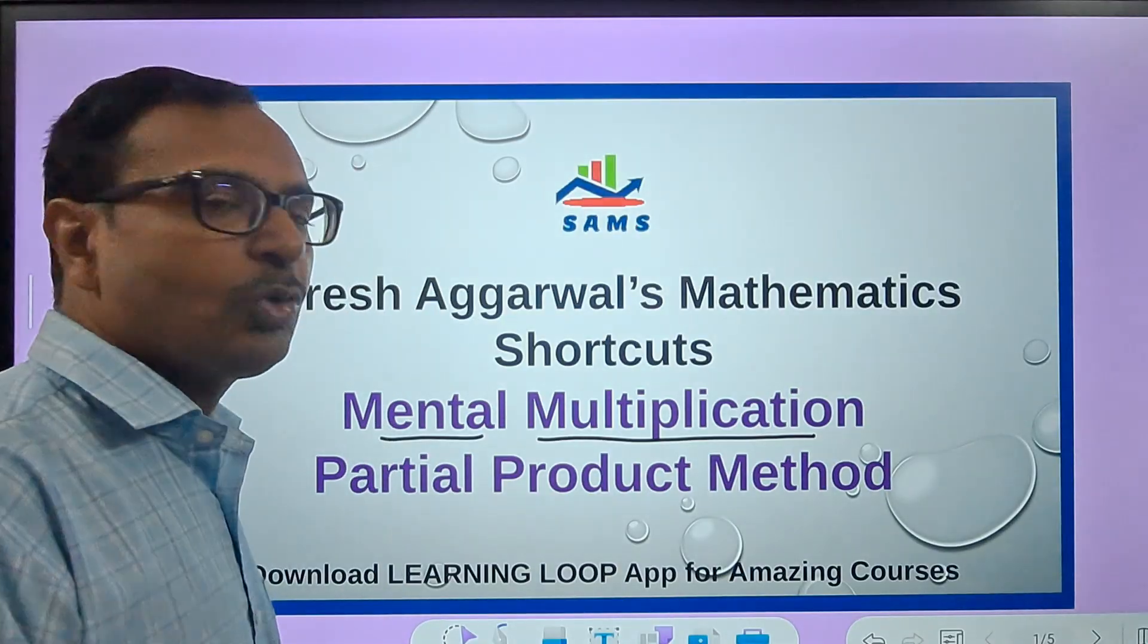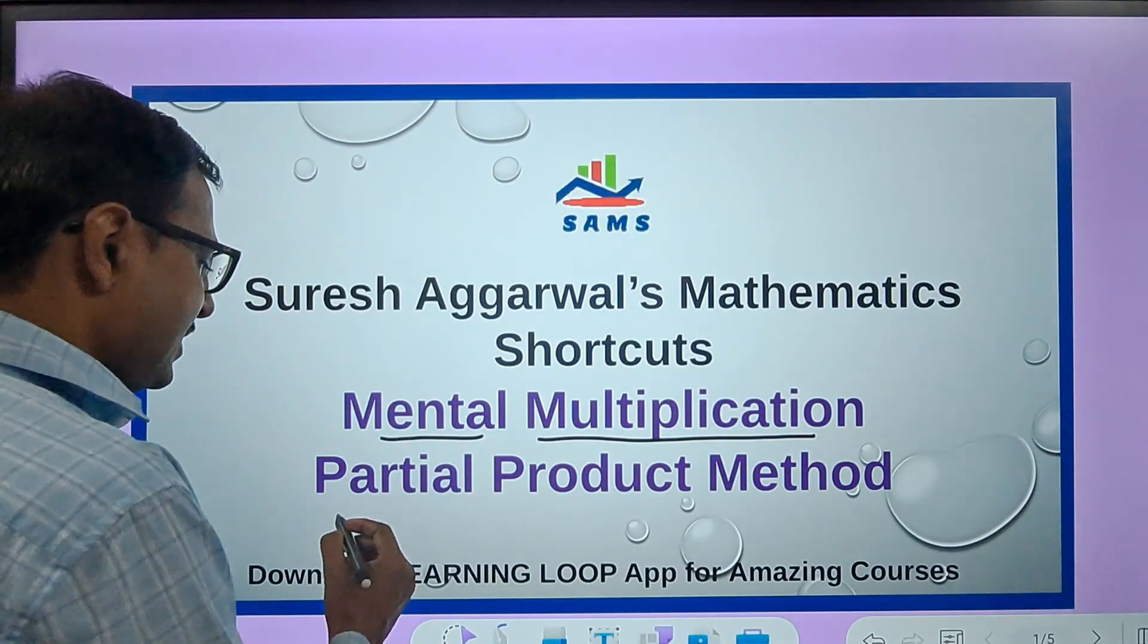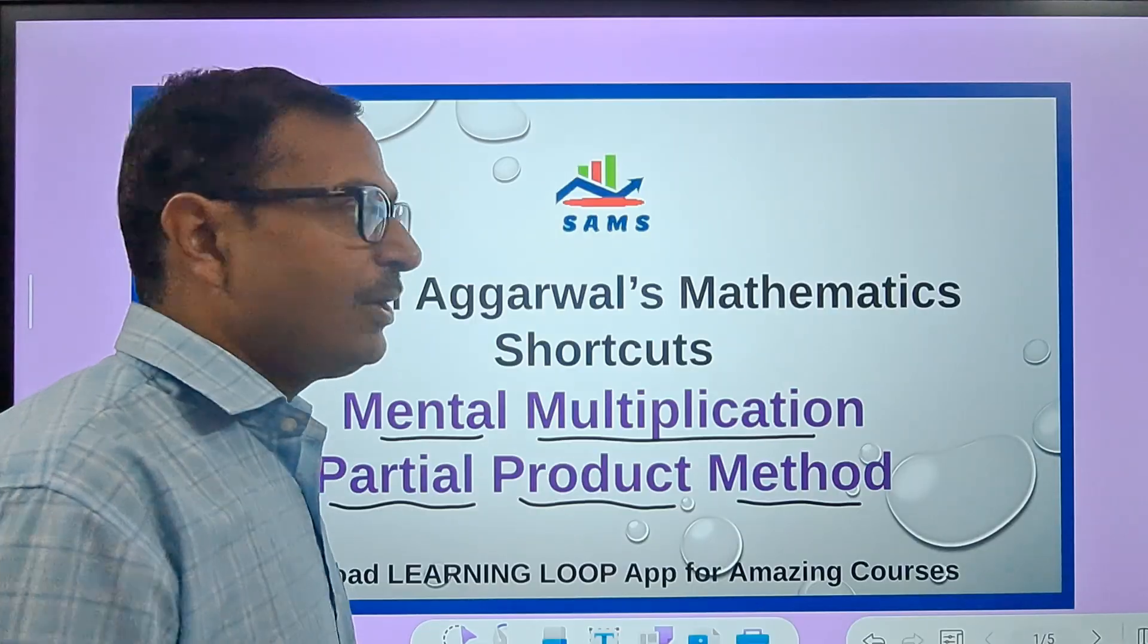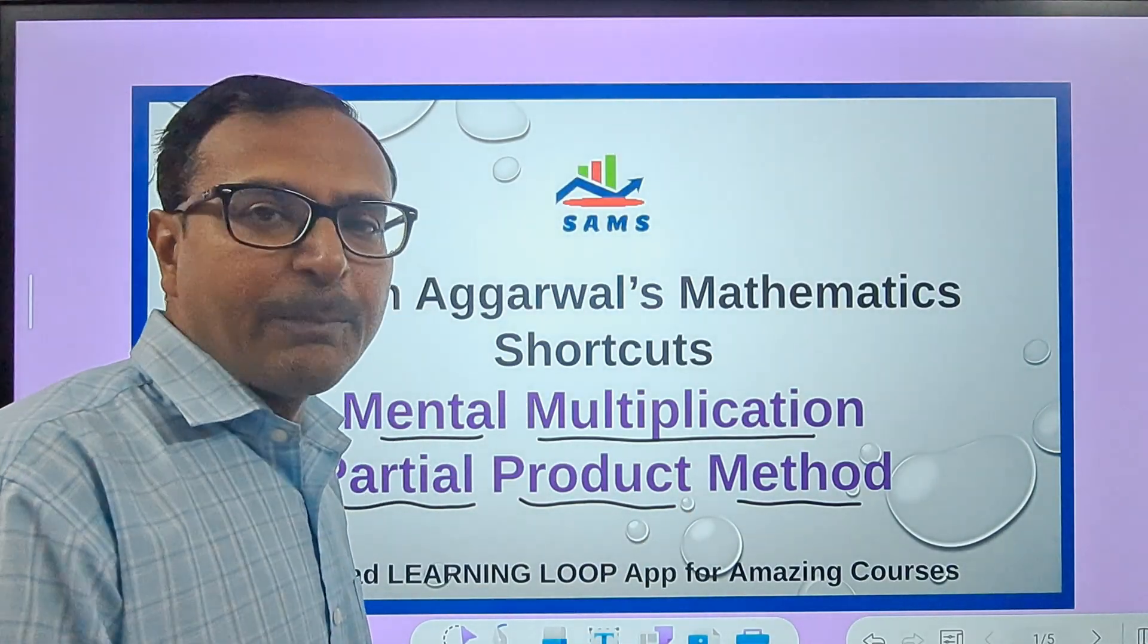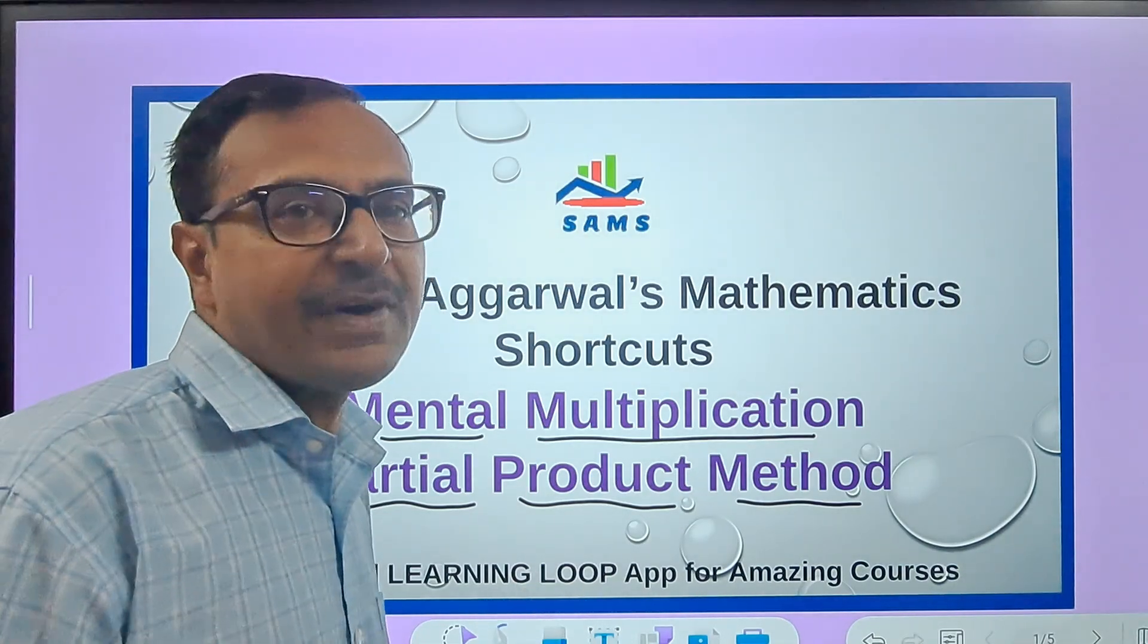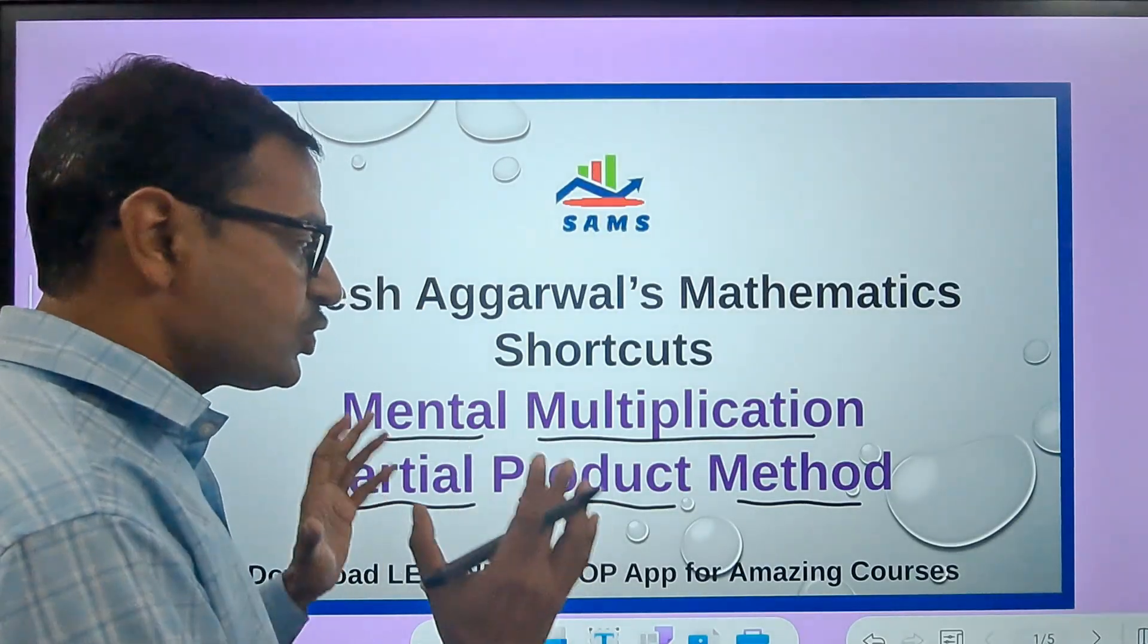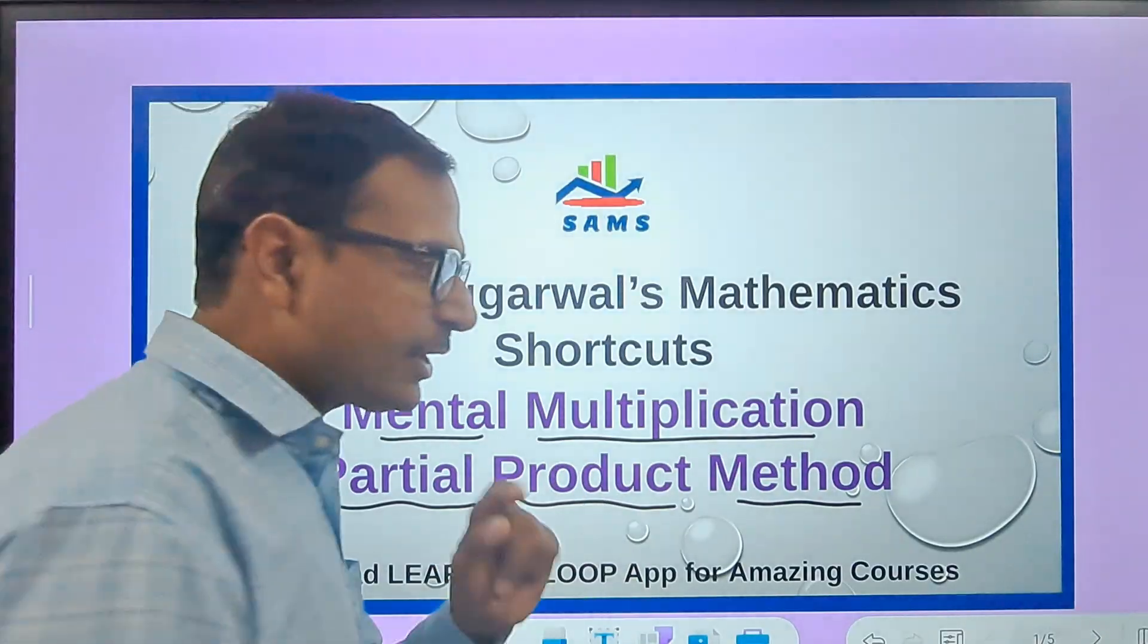You have to be really good in mental multiplication. This method is the partial product method, which is the most common method that students normally undertake. We have put up so many methods on the channel which will help you develop 10 times faster speed of multiplying numbers, but this is the most basic method and everybody should focus on this.